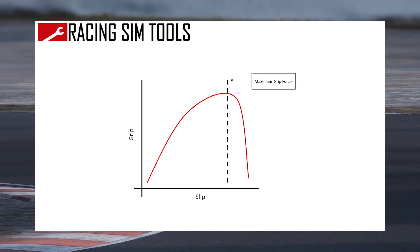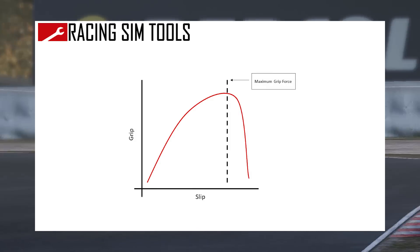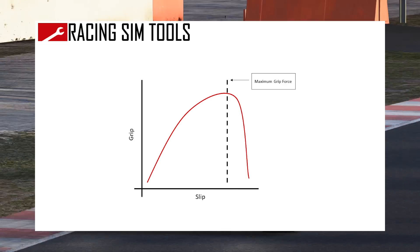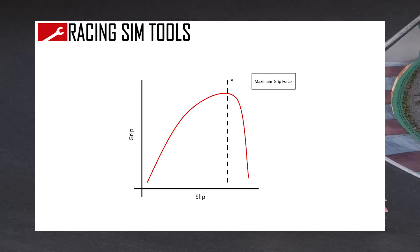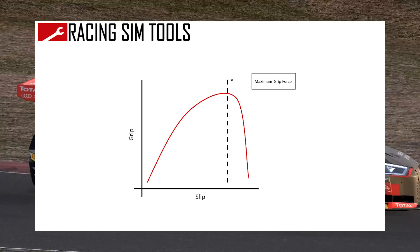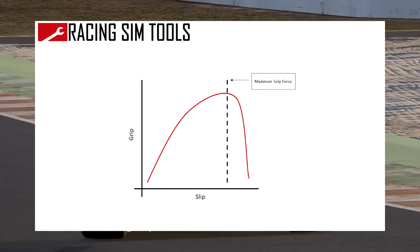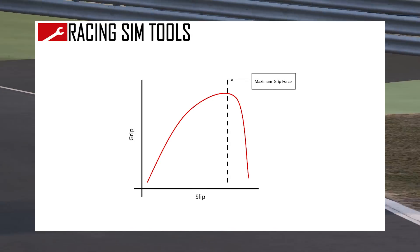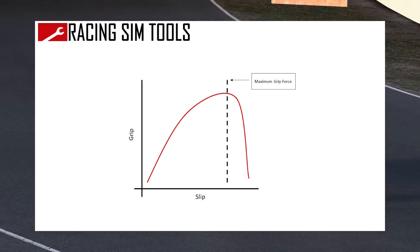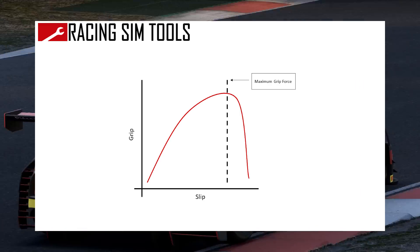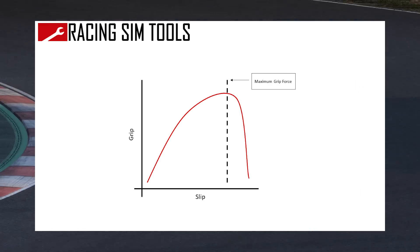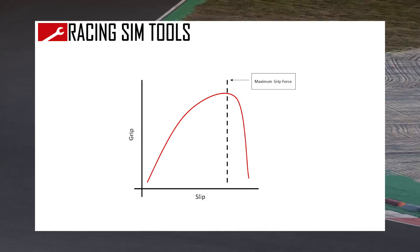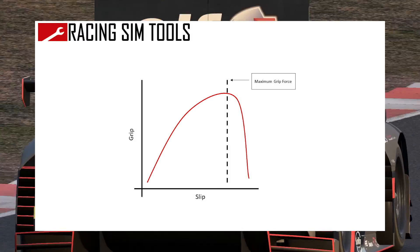The red line is a specific tire — this is a theoretical tire that I just made a curve real quick to show you guys. You can see, as we increase the slip, we get more grip force until a certain point. That's at that dashed line, and you see there's a little note that says maximum grip force. This is the slip angle at which we produce the maximum grip of the tire.